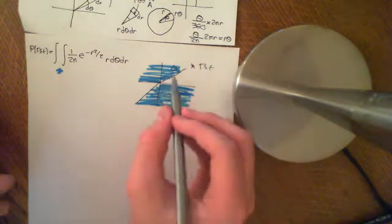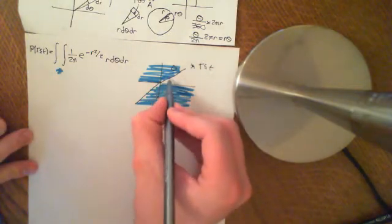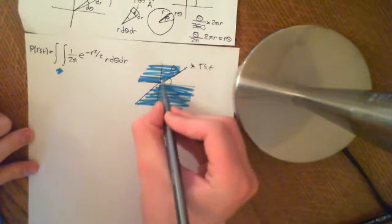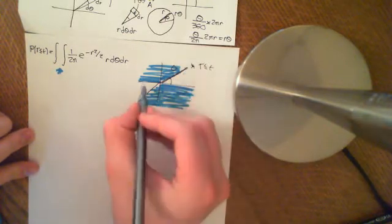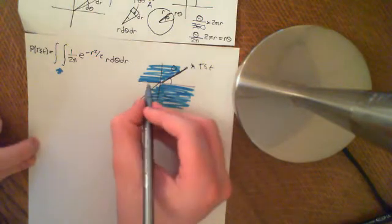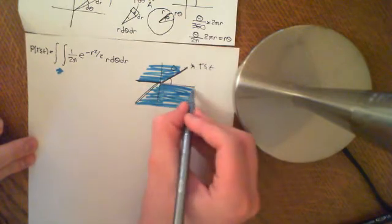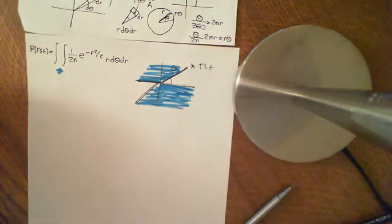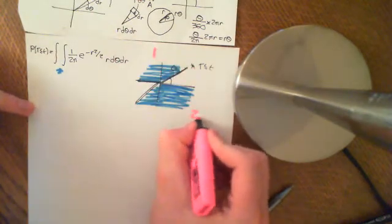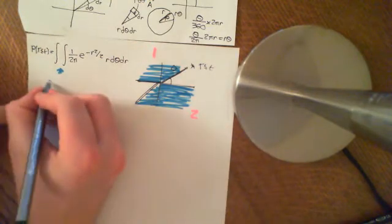We now just need to work out our bounds. We need to work out what this starting theta value is. We're going to have to integrate in two parts: this part here — integral 1 — and this part here — integral 2. So we're going to split this integral into two parts.